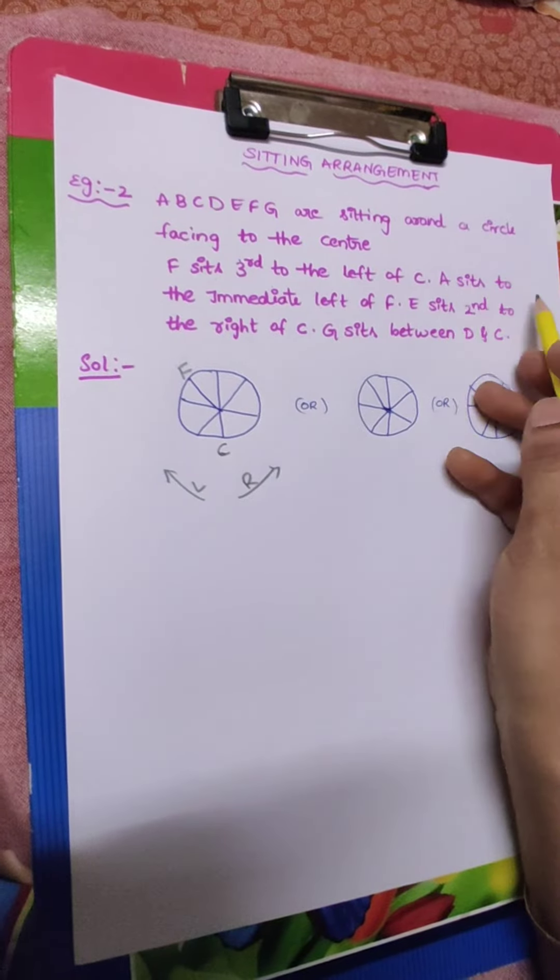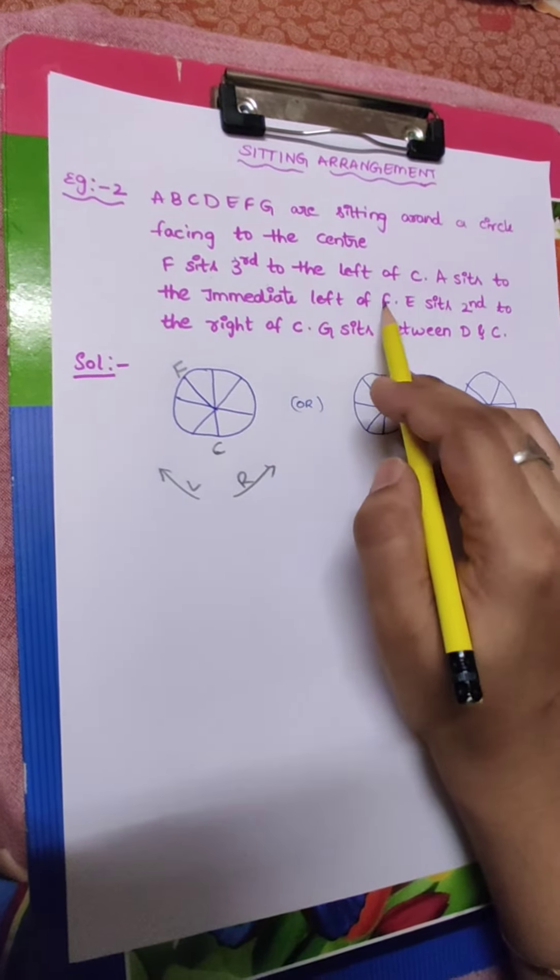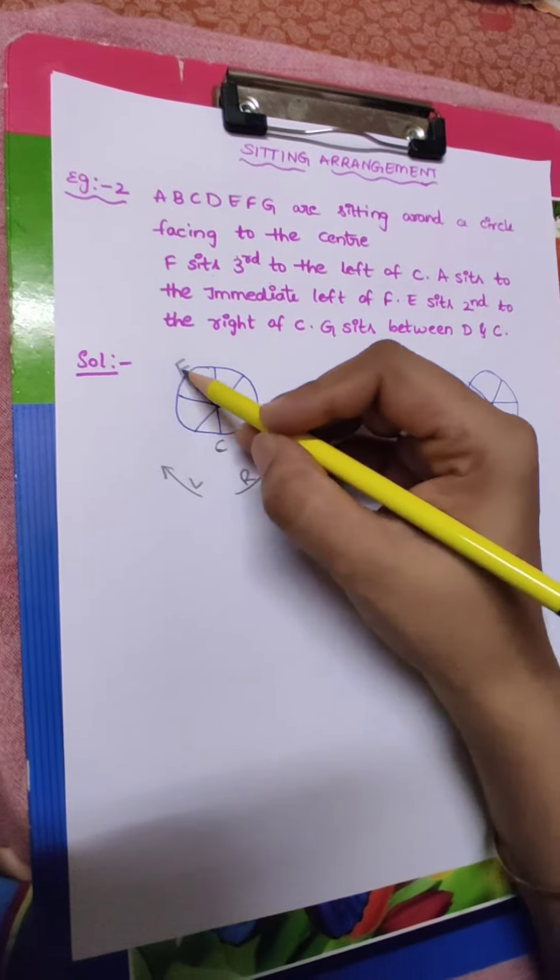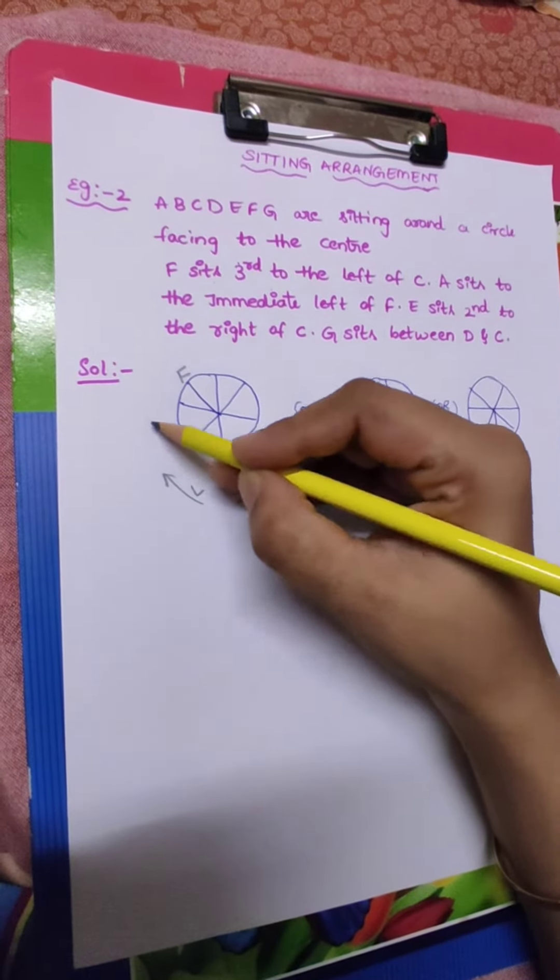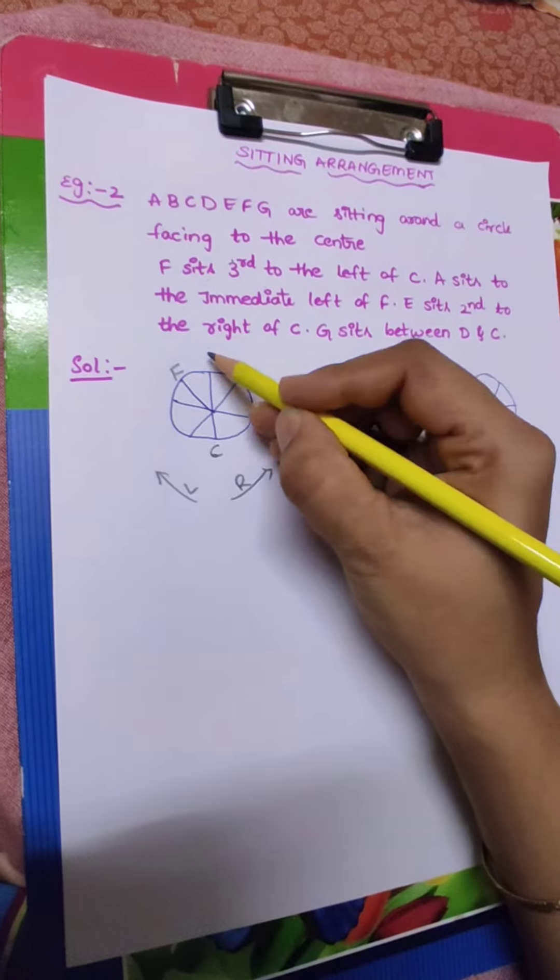Next, A sits to the immediate left of F. F immediate left - F is here, left is like this. So F, immediate left is A.